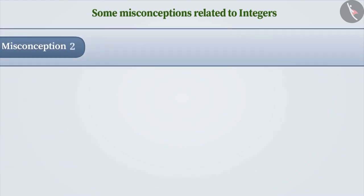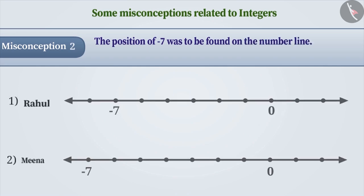Misconception 2. Rahul and Meena had to express minus 7 on the number line. For this, they drew a number line as follows. Can you tell me who correctly expressed minus 7 on the number line?